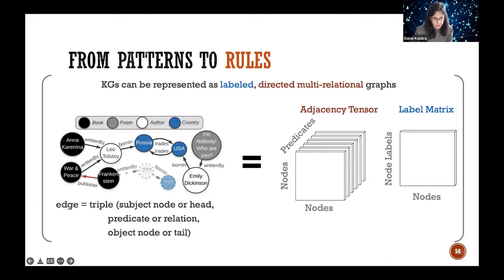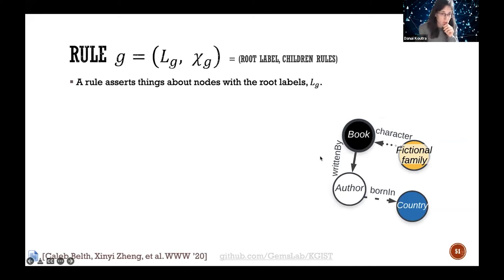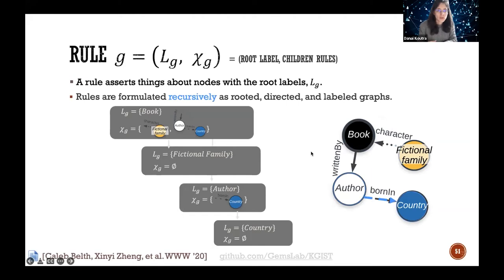This work was applied to knowledge graphs, which store general world information. From a graph-theoretic perspective, a knowledge graph is represented by an adjacency tensor capturing connections and relations between nodes, plus a node label matrix. For example, a knowledge graph has triples like 'Leo Tolstoy has written War and Peace.' Rules assert things about nodes with a root label — one rule applying to books says books have fictional family characters and are written by authors born in countries. Rules are formulated recursively as rooted, directed, labeled graphs.